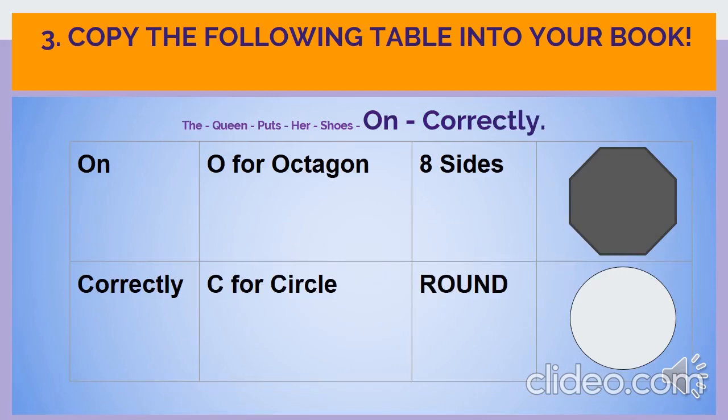Pencils done. We're almost done. Now for the last two words: The queen puts her shoes on correctly. Of course, she's the queen. The letter O in on is for octagon and that is a shape with 8 sides. Another way to remember this is to think about the letter O in the word octopus. And if you think about it, how many legs does an octopus have? Yes, 8. That's right. A shape with 8 sides is called an octagon. The letter C incorrectly is for circle. Now a circle does not have sides because a circle is round. Copy down your notes.